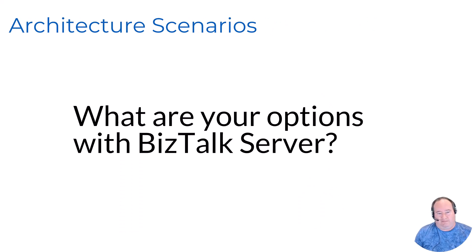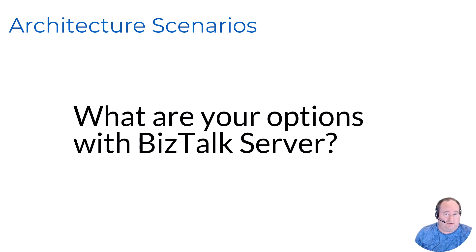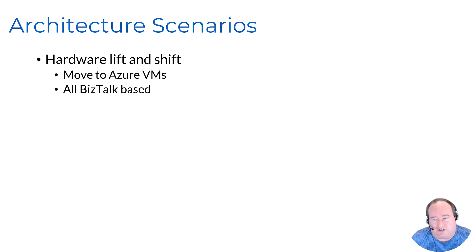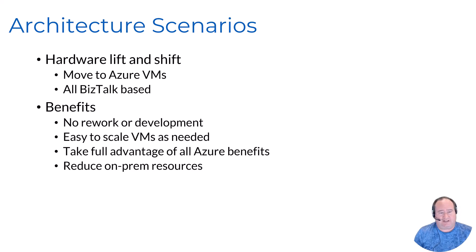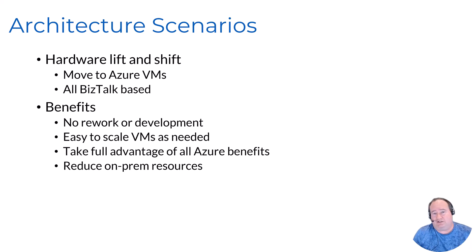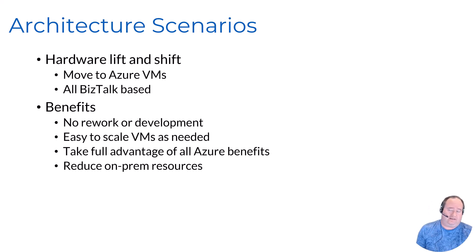Let's talk about some architectural scenarios that exist with BizTalk Server. The first is a hardware lift and shift — more common five-plus years ago — where you take your on-premise BizTalk Server and SQL and move them to Azure in a virtual network, running on Azure virtual machines. This is a viable solution today, though it doesn't solve the problem of running out of mainstream support a few years down the road. Benefits include no rework or development required, the ability to scale virtual machines up and down in Azure, and reduced resources in your on-premise data center. You can also take full advantage of Azure services like virtual networks.